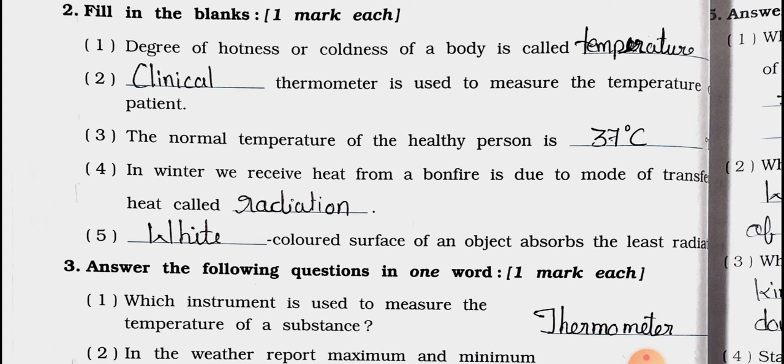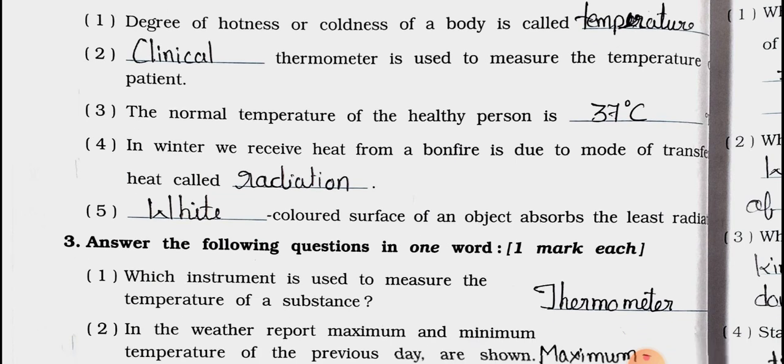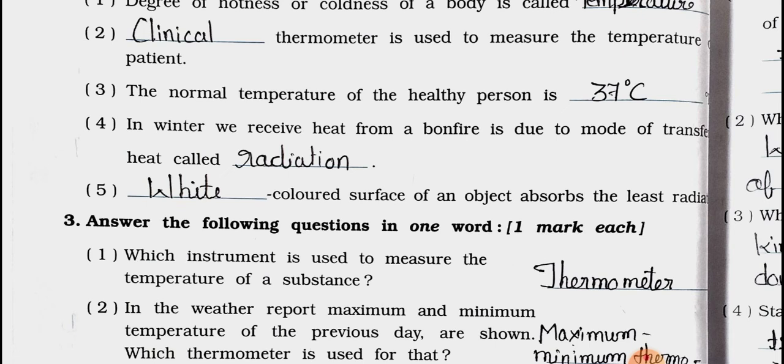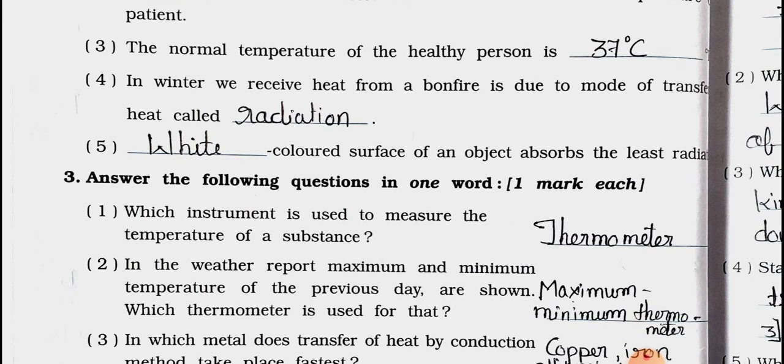Number 3: The normal temperature of a healthy person is 37 degree Celsius. Number 4: In winter, we receive heat from a bonfire is due to mode of transfer heat called blank. Answer is radiation. In winter, we receive heat from a bonfire is due to mode of transfer heat called radiation. Number 5: Blank colored surface of an object absorbs the least radiation. Answer is white. White colored surface of an object absorbs the least radiation.